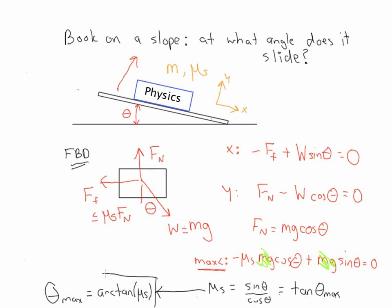And there you go. At any angle smaller than theta max, the book will not slide down the slope. At any angle greater than theta max, the book is going to start sliding down the slope. Thank you very much, have a good day.